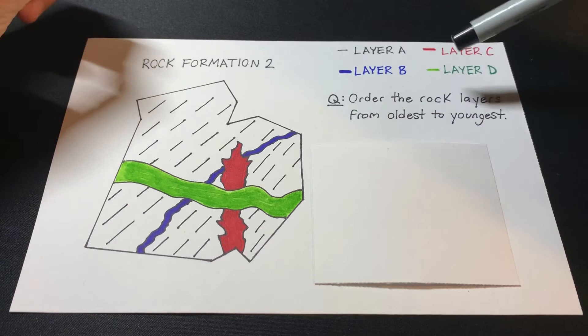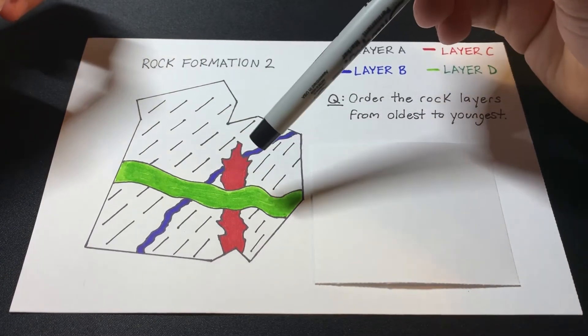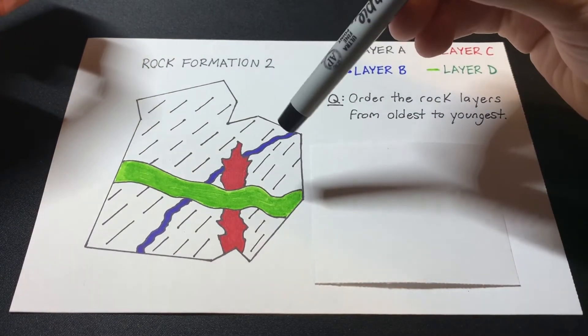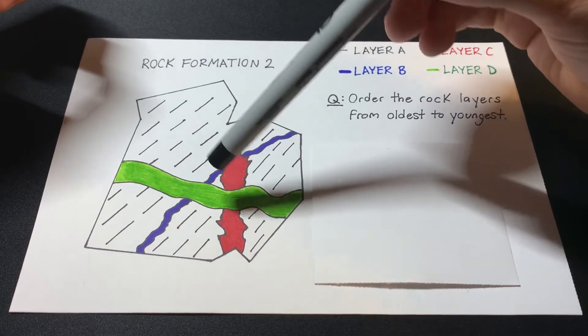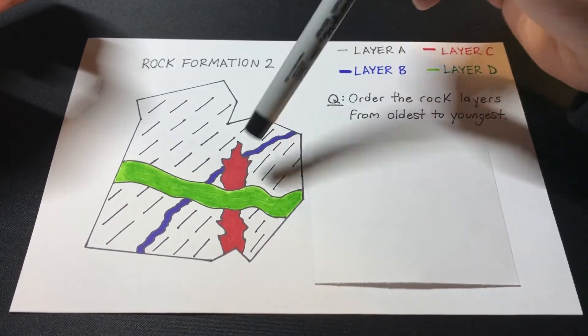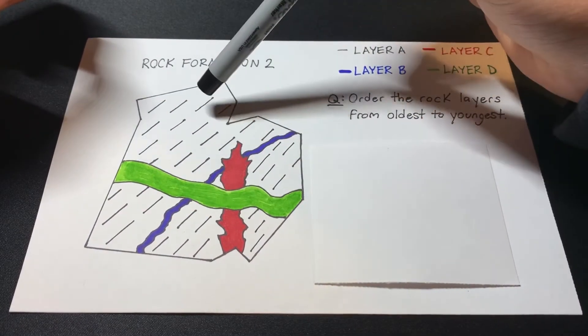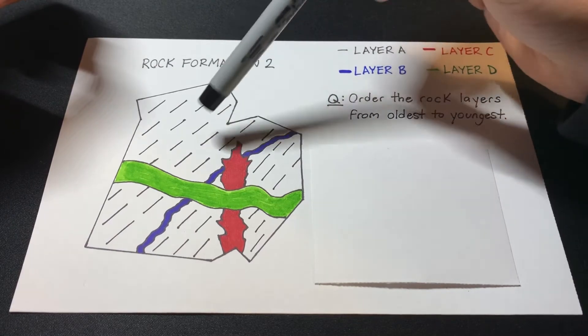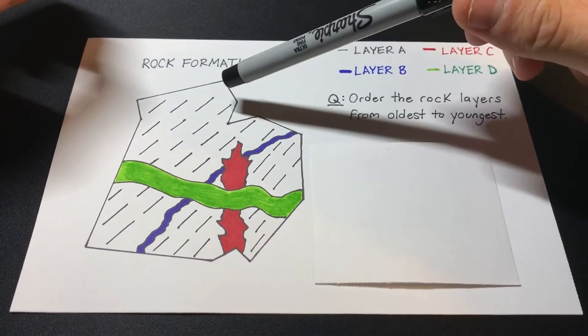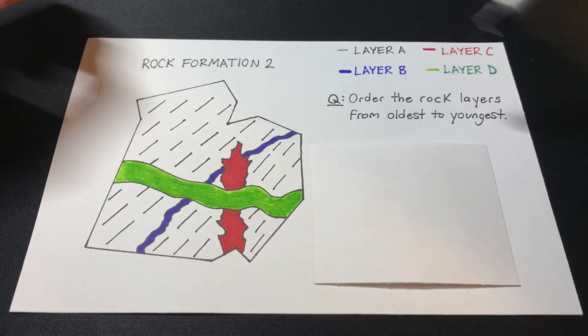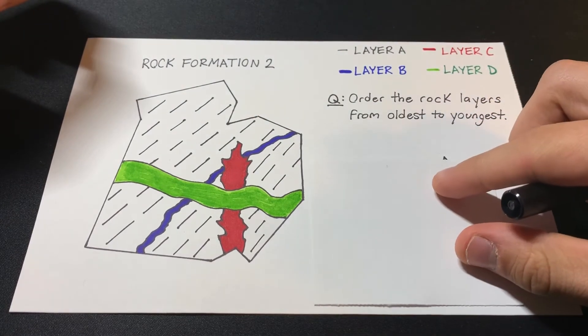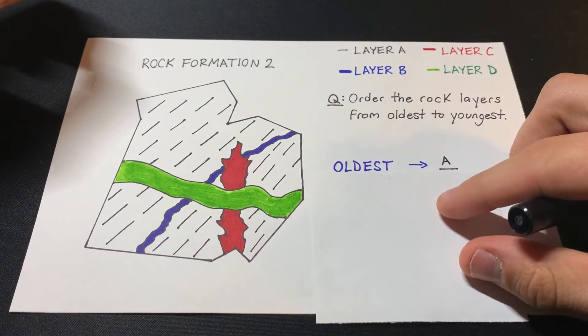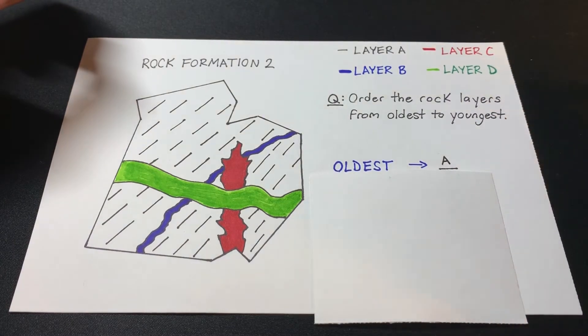Now remember, the oldest rock layer is going to be the one that's getting cut across by the other three rock layers, right? So as you see in this figure, we have the red, blue, and green rock layers cutting across the black rock layer in the background, right? So that would make rock layer A the oldest because it's getting overlapped or cut across by the other three.